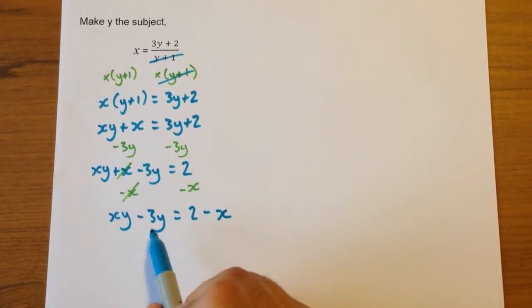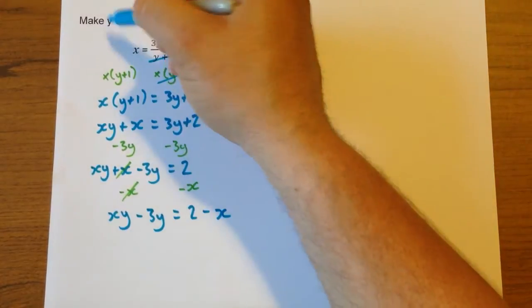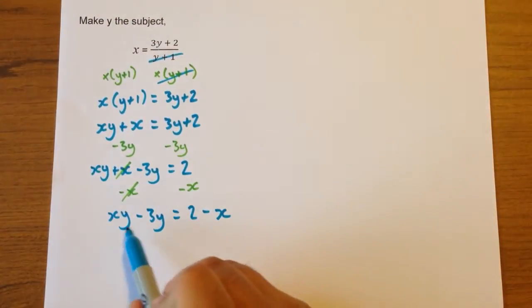Then subtract x from both sides. Now we've got both y's on the same side, but we only want one y - we want it to say y equals something.